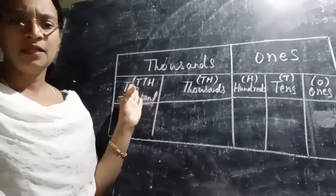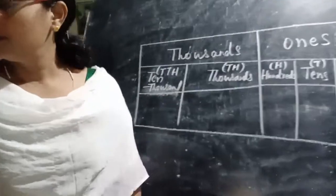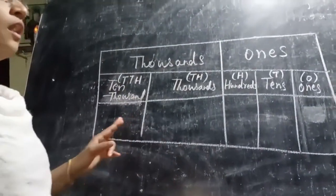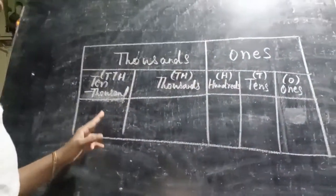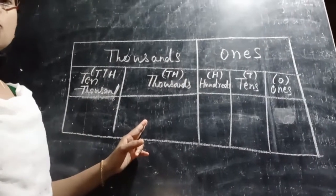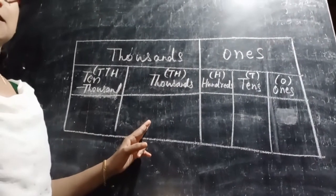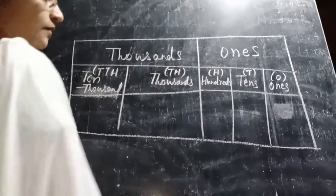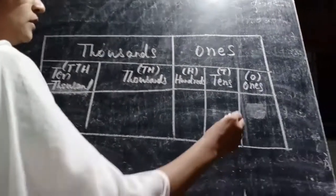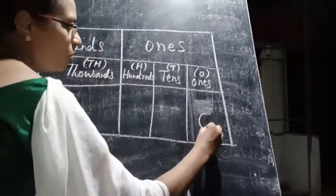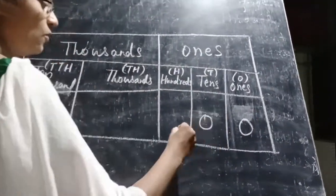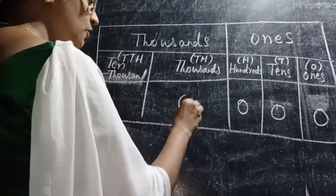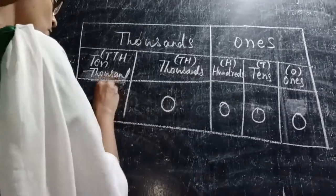How do we write ten-thousand in this place value system? The digits are: zero, zero, zero, zero, one — giving us 10,000.